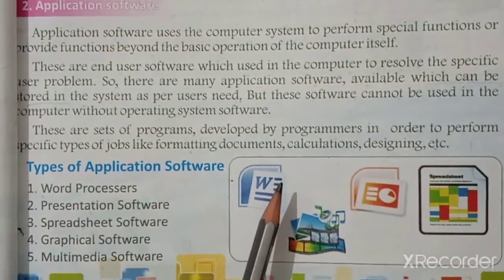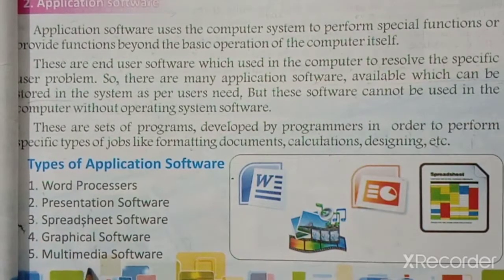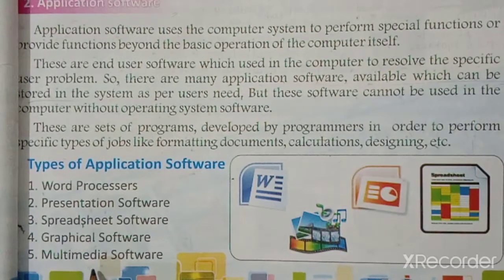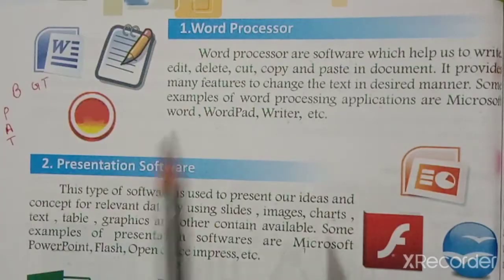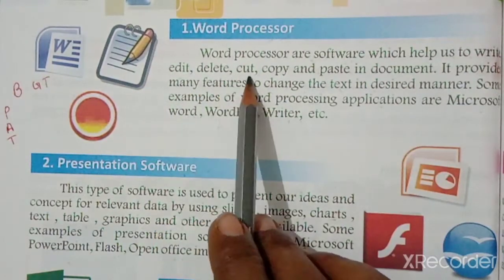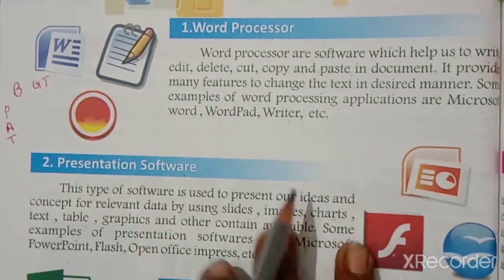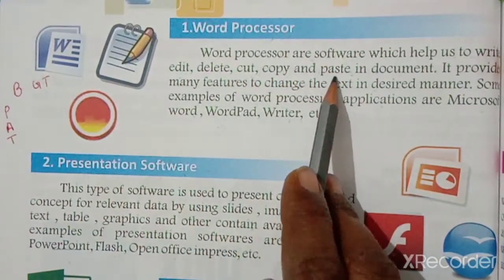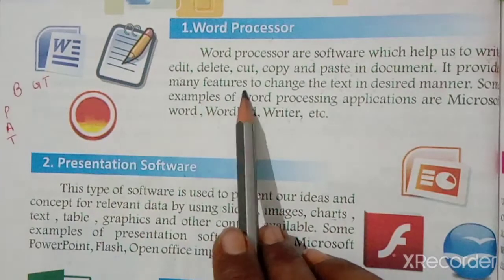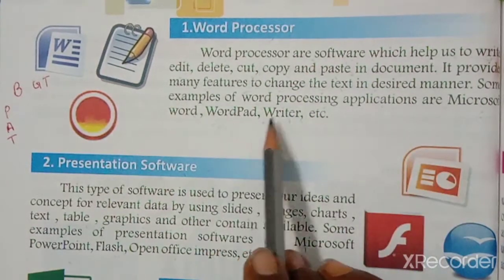The types of application software are: word processor, presentation software, spreadsheet software, graphical software, and multimedia software. First, word processor is software which helps us to write, edit, delete, cut, copy, and paste in a document. It provides many features to change the text in a designed manner. Some examples of word processing applications are Microsoft Word, WordPad, and Writer.